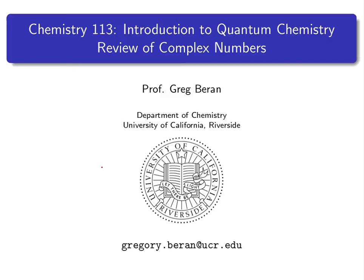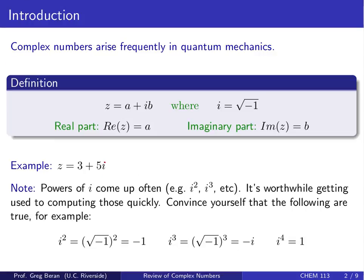This video is going to provide a brief review of complex numbers for use in quantum chemistry. A complex number z is defined as a number that has both real and imaginary parts, something like z equals a plus ib. So a is the real part, b is the imaginary part, and i is equal to the square root of minus 1.